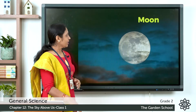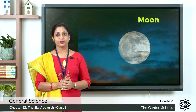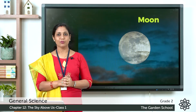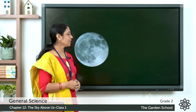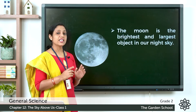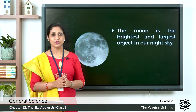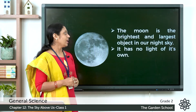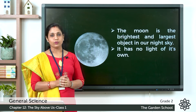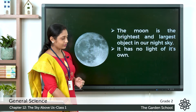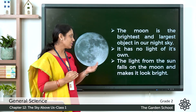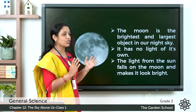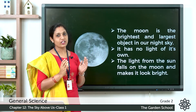Next let's learn about the moon. We usually find the moon at night — when you look up at the sky you can see the moon. The moon is the brightest and largest object in our night sky. The moon has no light of its own. The light from the Sun falls on the moon and makes it look bright.